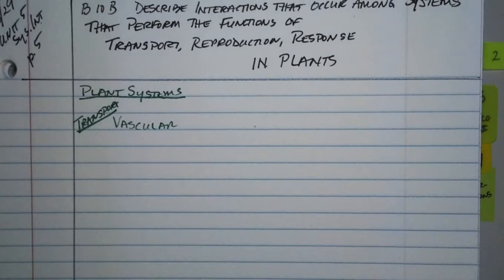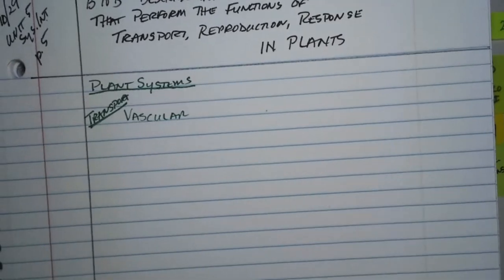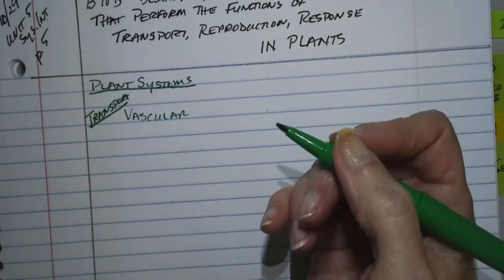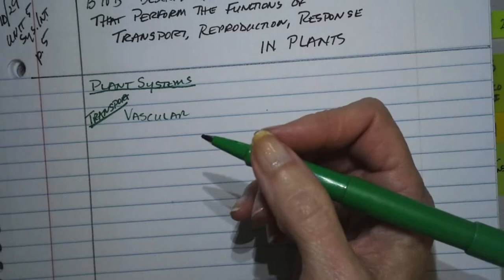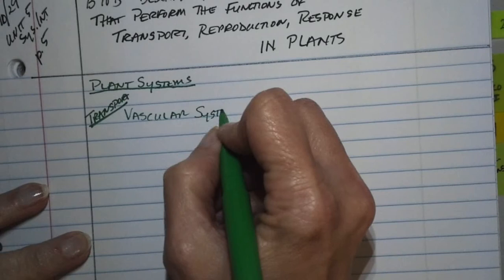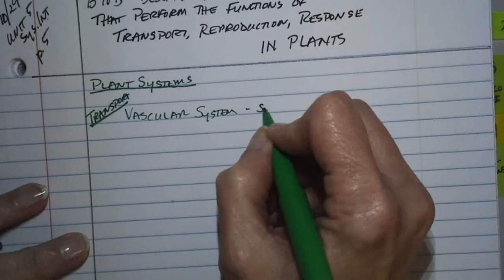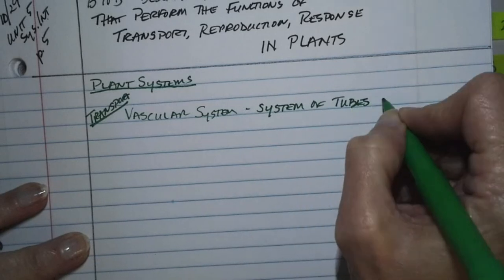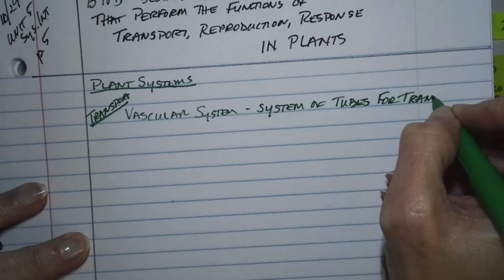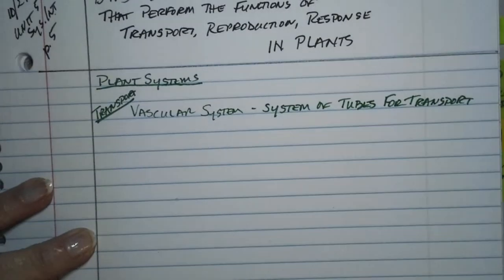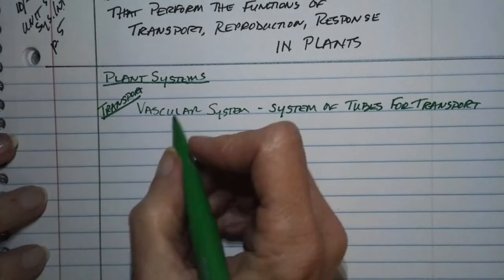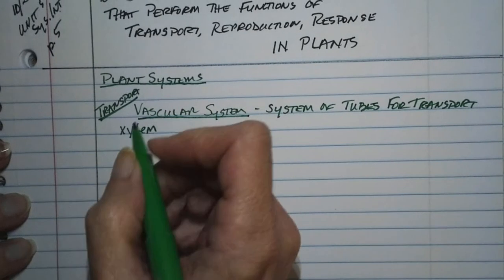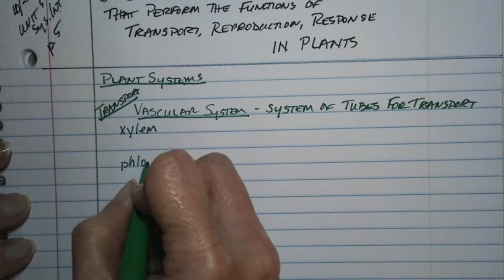When we talk about plants, there's a generic word in science when we talk about organisms, and that is vascular. We can talk about your vascular system, like the cardiovascular system. We can talk about a vascular system in plants. Vascular just means it's got a system of tubes for transport. These tubes have names: you've got the xylem and you have the phloem.